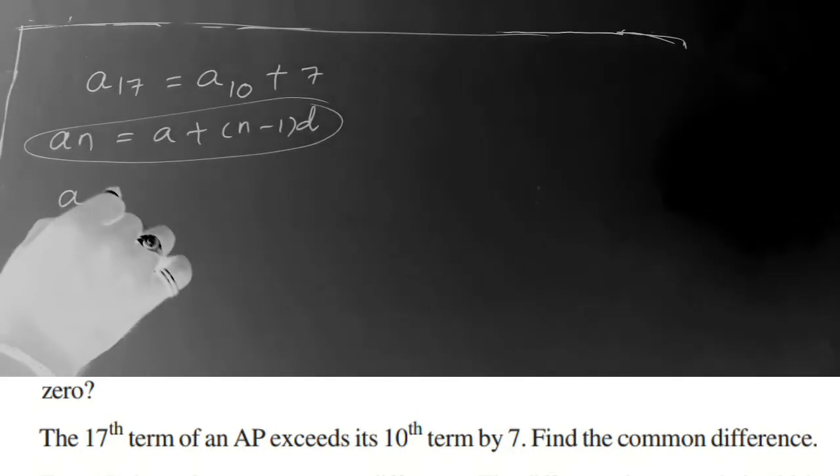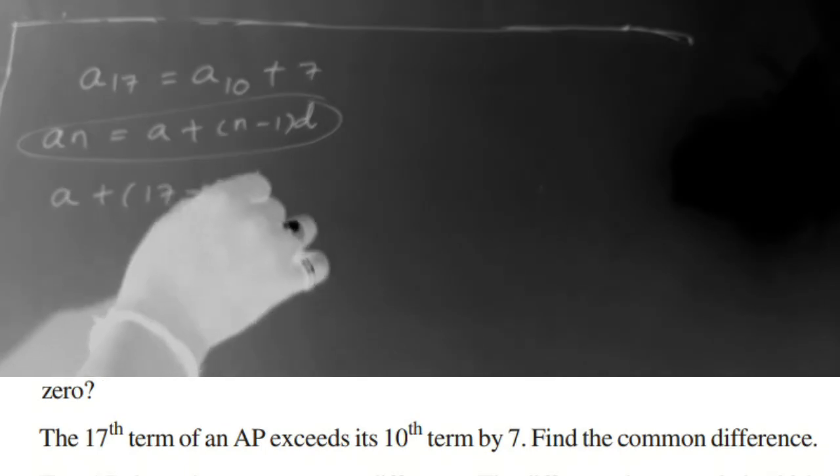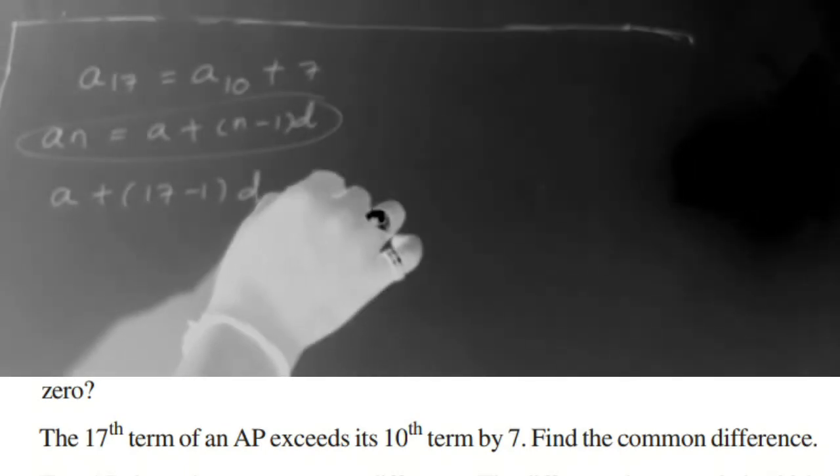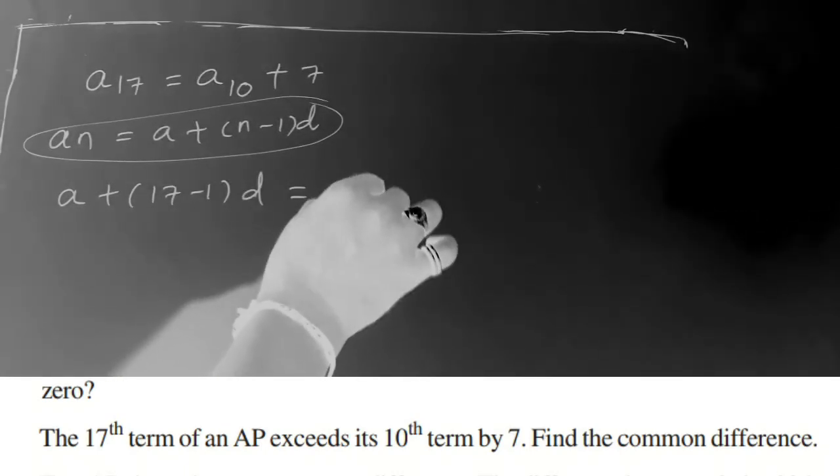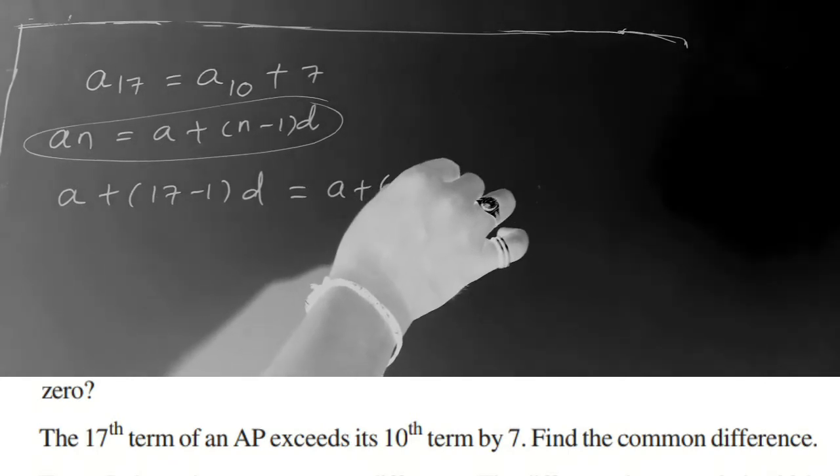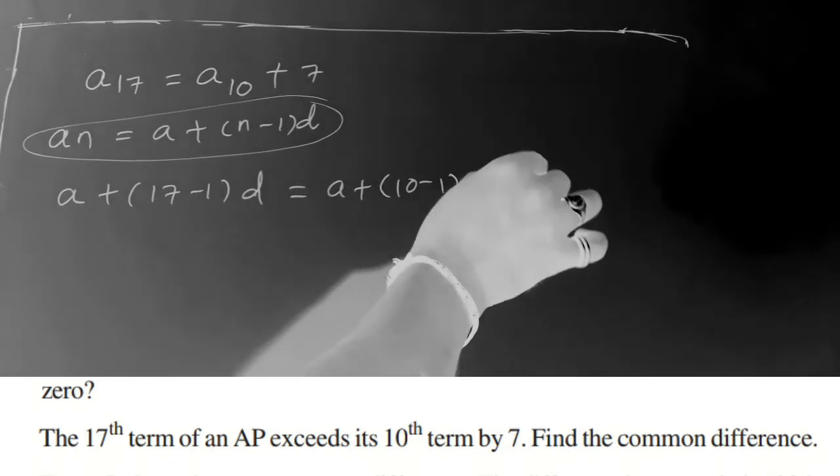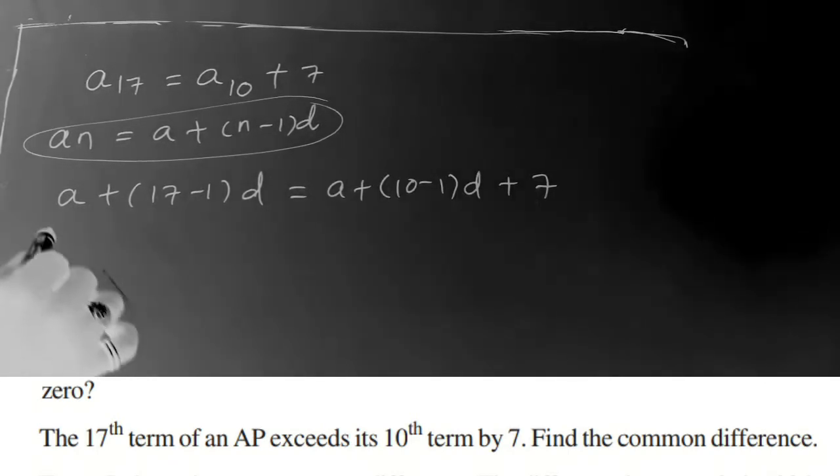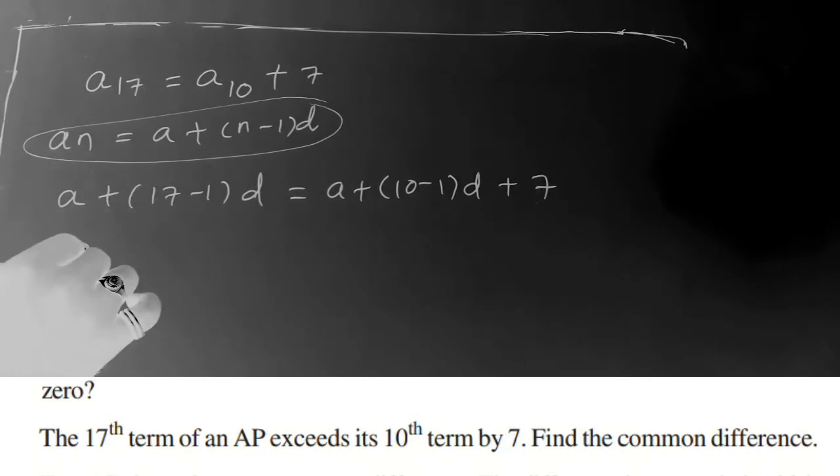a17 is nothing but a plus 17 minus 1 into d. That is equal to a10, which is a plus 10 minus 1 into d, plus 7. So here a plus 16d equals a plus 9d plus 7.